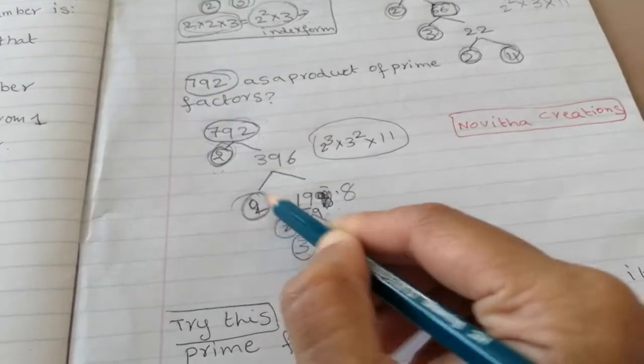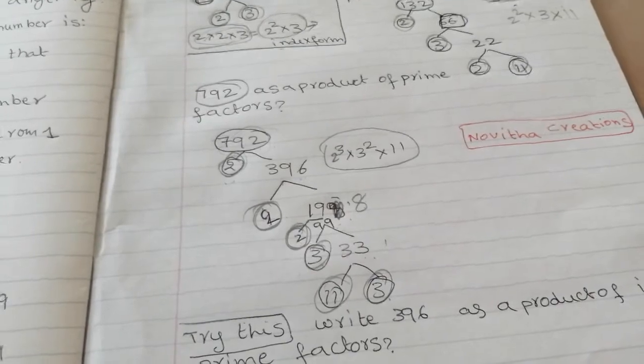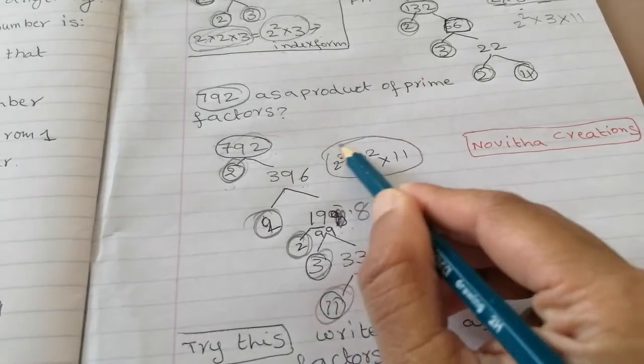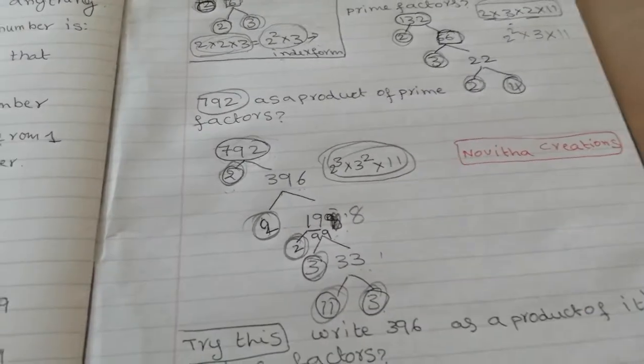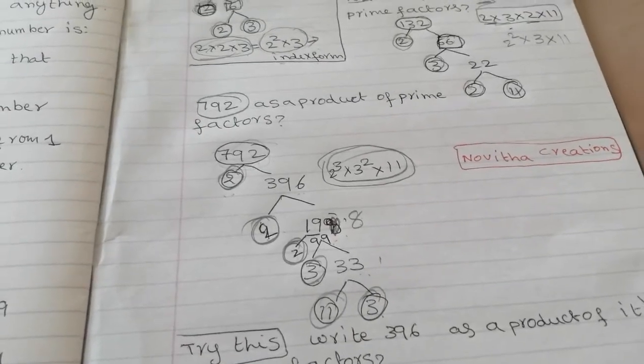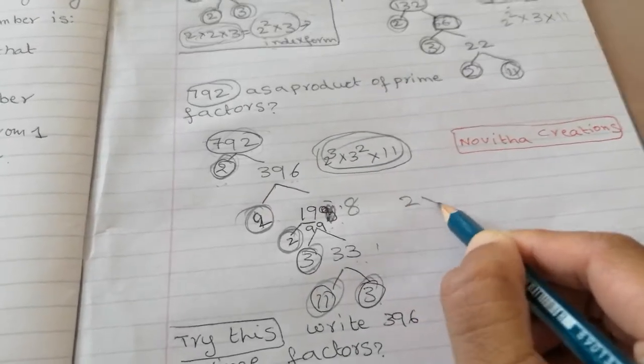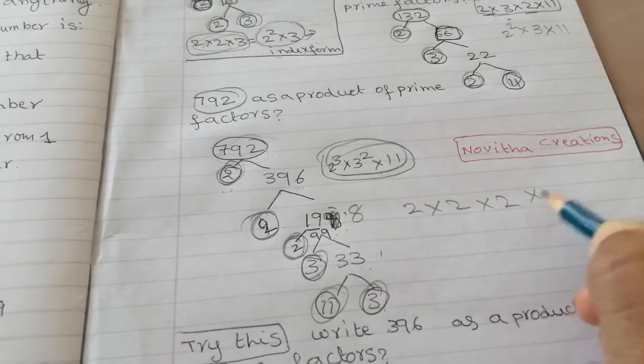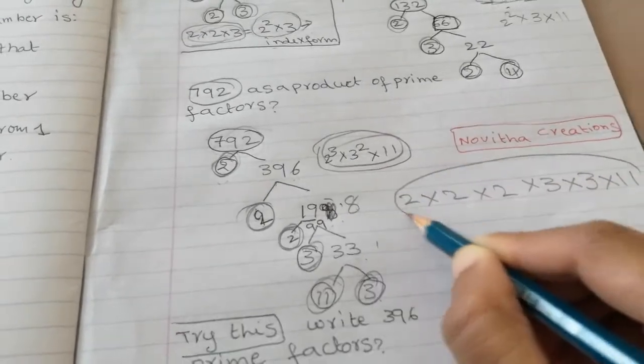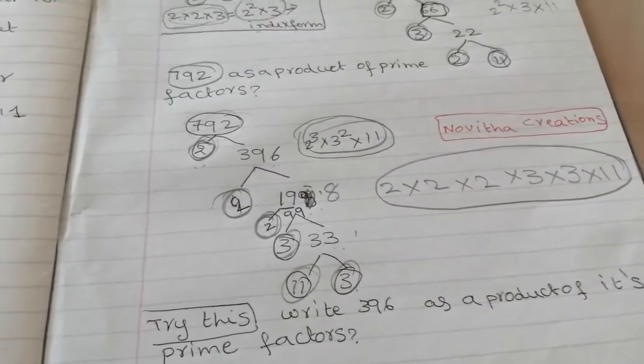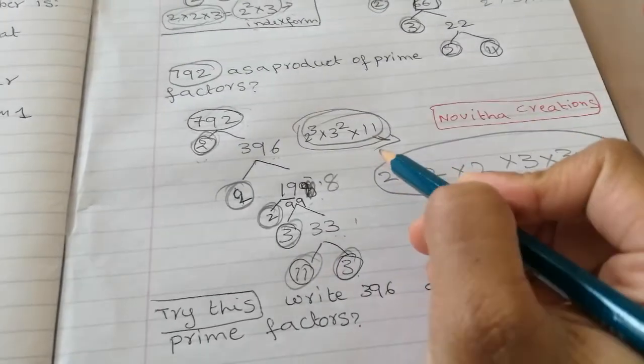And we need to give the answer. So here 2 2 2 3 3 11. So how can we give the answer? Here I gave index form. But in normal prime numbers, prime factors, if you need to write prime factors in exam, then you must have to give in prime factors way. So 2 times 2 times 2, 3 times 3 times 11. This is the way you need to give in the exam. If they ask for index form, this is the way we need to give answer.